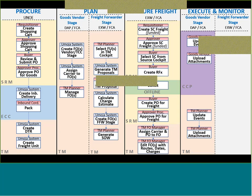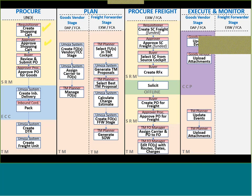Let's remember yesterday: for the UNOE scenario we raised the shopping cart, then the approval, review, and approval of PO. We went through this quickly and looked at the main fields. We saw how the Umoja system created the inbound delivery document. We did see how that generated the DTR - the DTR document that today will be the FWO, the forwarding order. We saw the goods vendor stage and how that affects TM for a DAP or FCA Incoterm scenario, automatically generating freight orders and assigning the carrier.